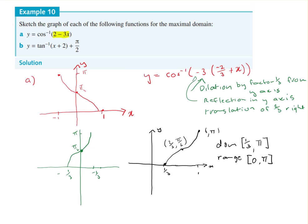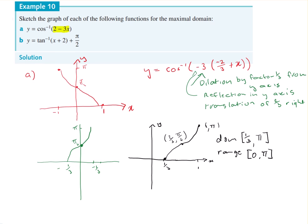So if you want a nice algebraic approach to do the domain, you can just write in two minus three x is greater than or equal to negative one and less than or equal to one. And now just do the algebra that goes with that.